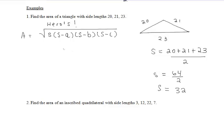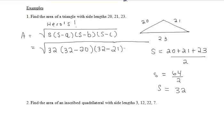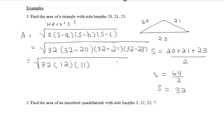Wherever we see an s in our equation, we substitute in 32. So we have 32 times (32 minus 20) times (32 minus 21) times (32 minus 23). That gives us 32 times 12 times 11 times 9. Make sure you're bringing down that radical sign throughout.